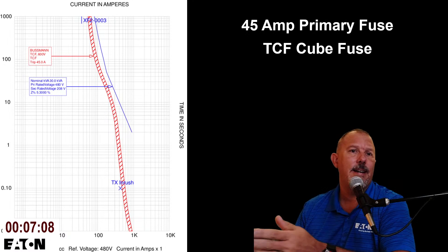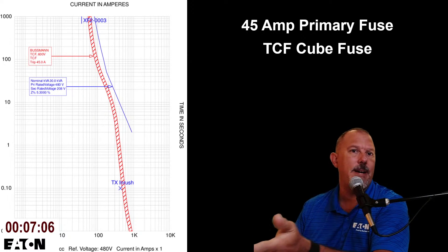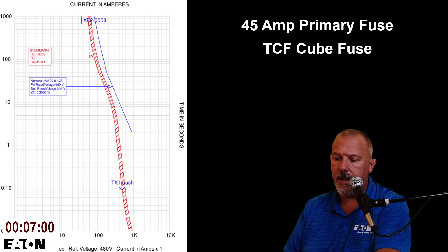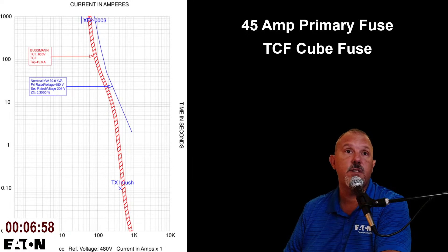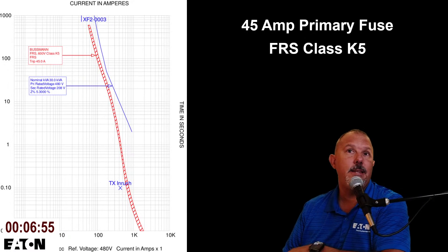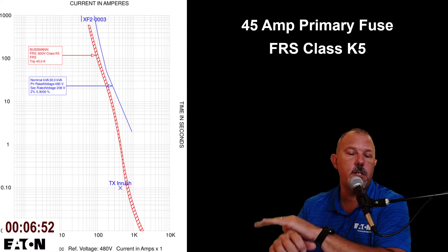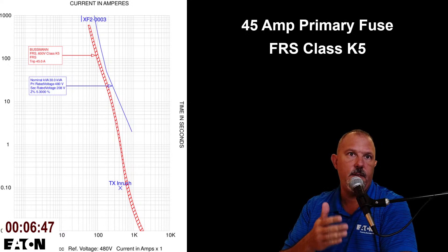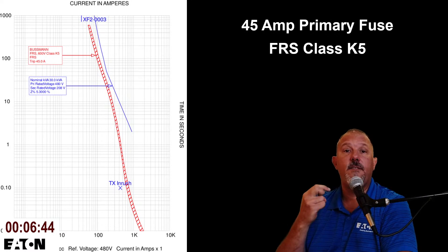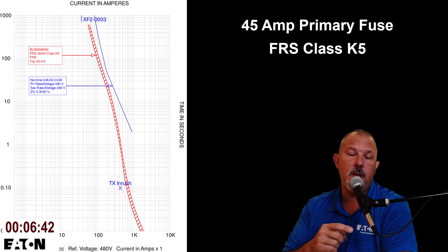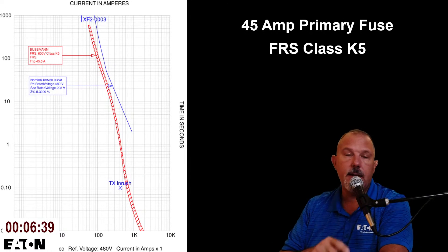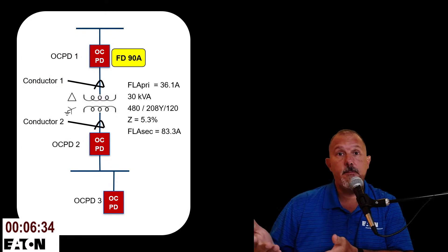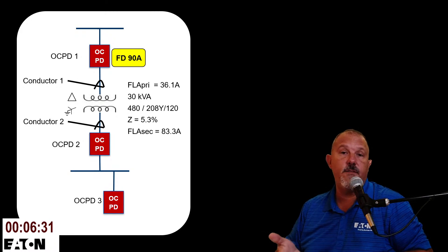For fuses: a 45-amp primary fuse also provides adequate transformer protection. Note that a class FRS K5 fuse has an intentional time delay, while a fast-acting fuse may not survive transformer inrush. Different fuses have different trip curves, so be mindful and select your fuses properly.